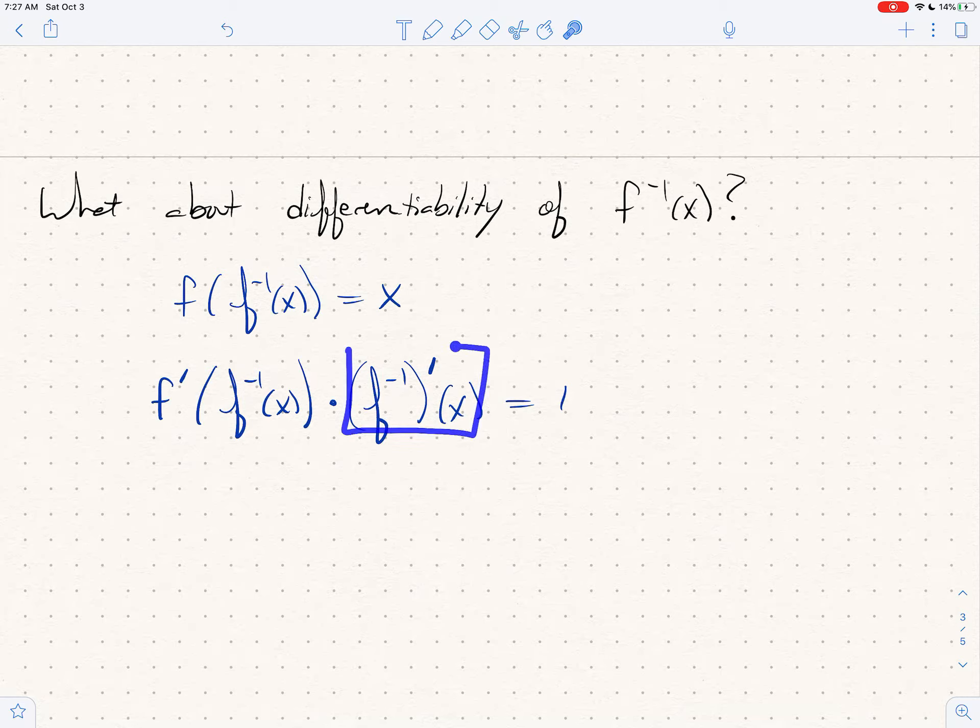And so you think about it, I want to actually solve for the inverse prime. And so when I do that I get F inverse prime of X is 1 over F prime of F inverse of X.